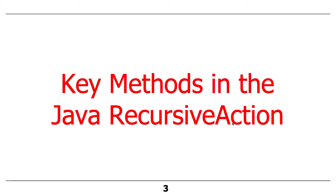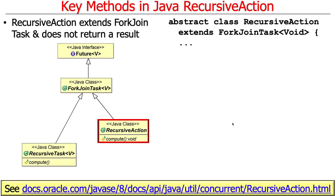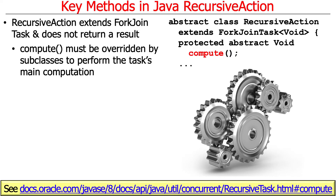Let's first talk about the key method in RecursiveAction. RecursiveAction is a subclass that extends ForkJoinTask and does not return a result. If you take a look, you'll see that the compute method on RecursiveAction doesn't return anything. The compute method is defined as an abstract void method — abstract void means this method must be implemented by subclasses and returns nothing.